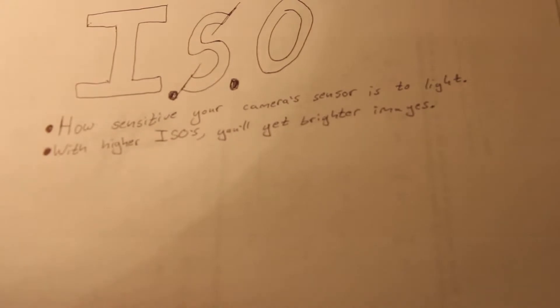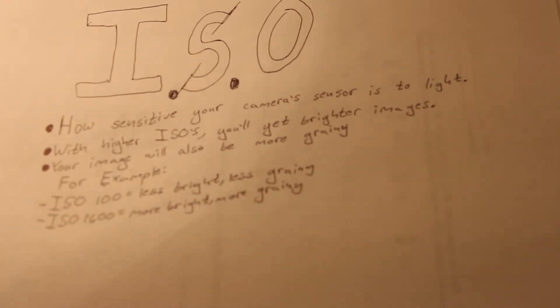But your image will also be more grainy. For example, an image with an ISO of 100 will have less graininess and be less bright, but an image with an ISO of 1600 will have more graininess but will be brighter. And that's ISO for you.